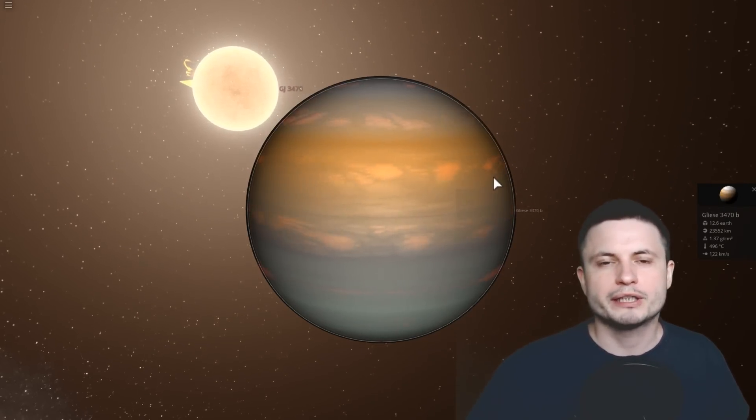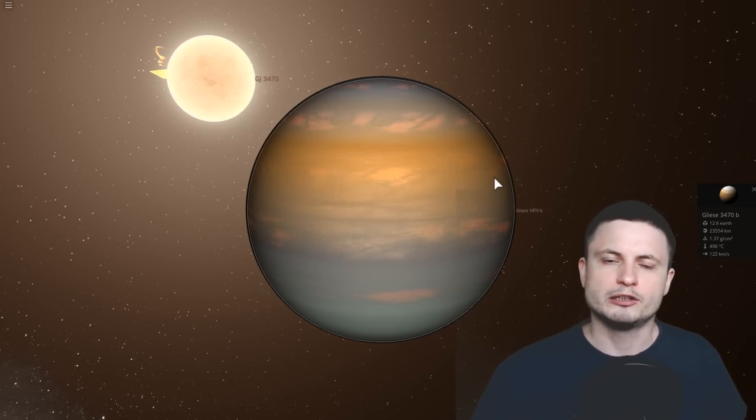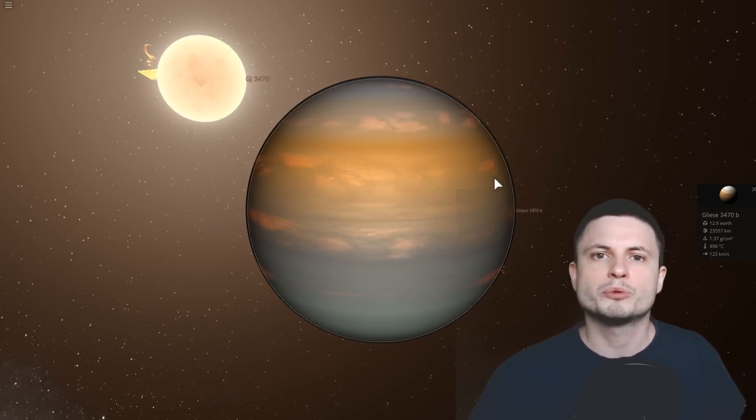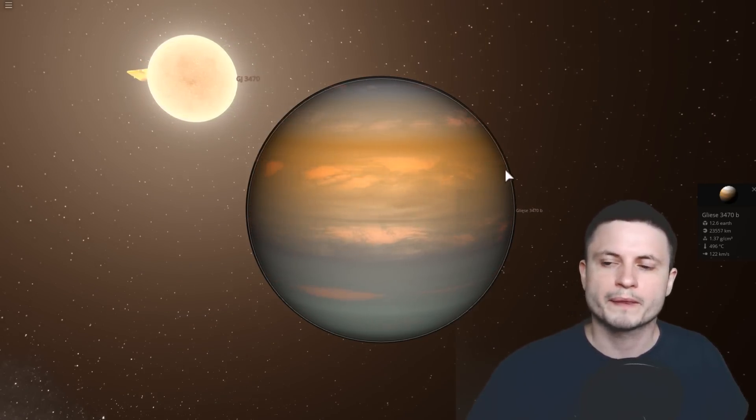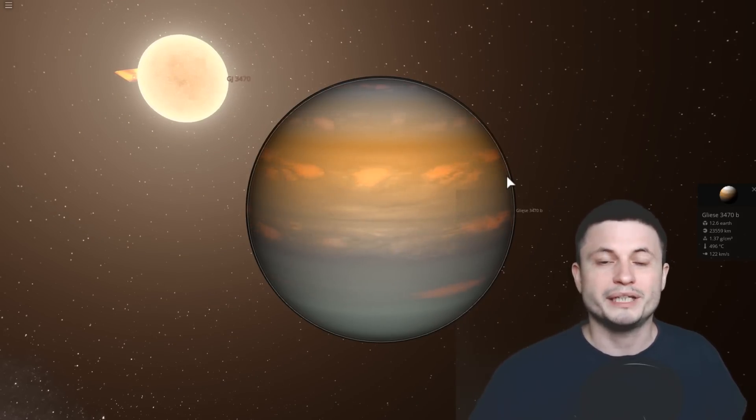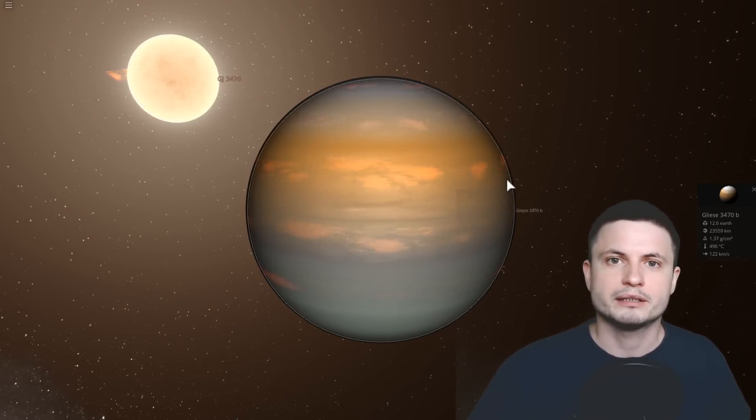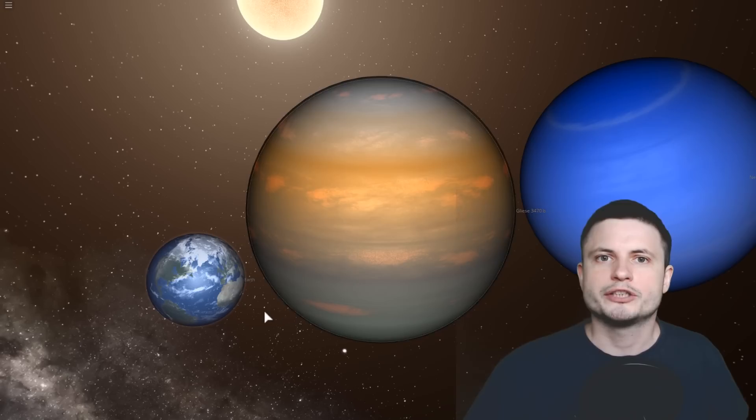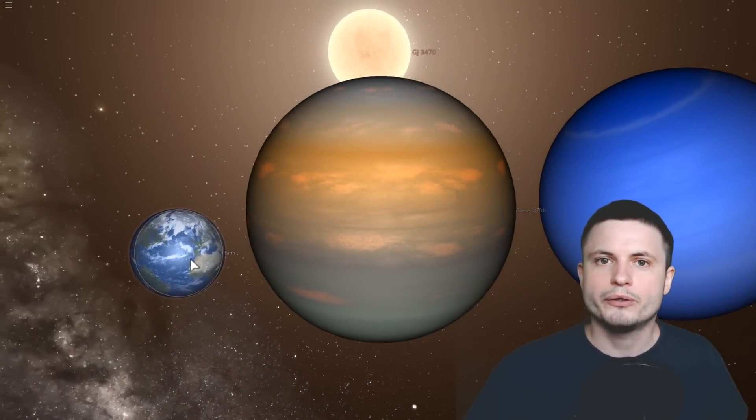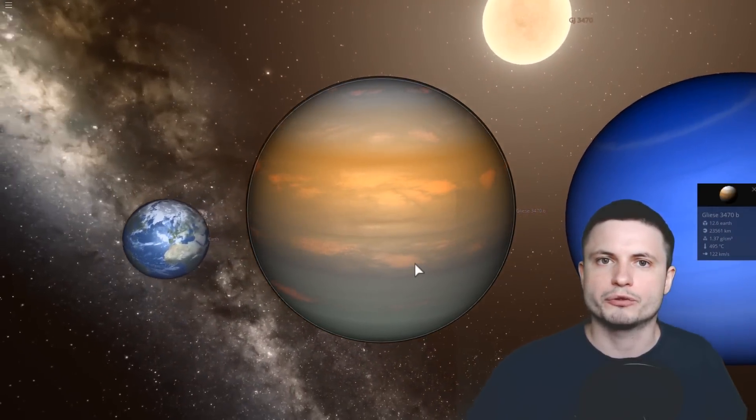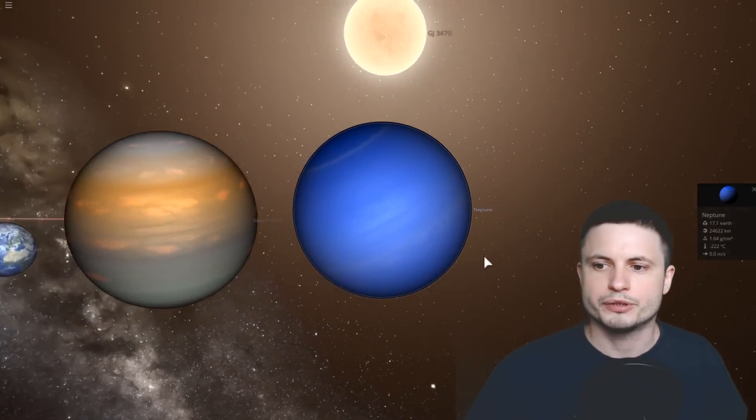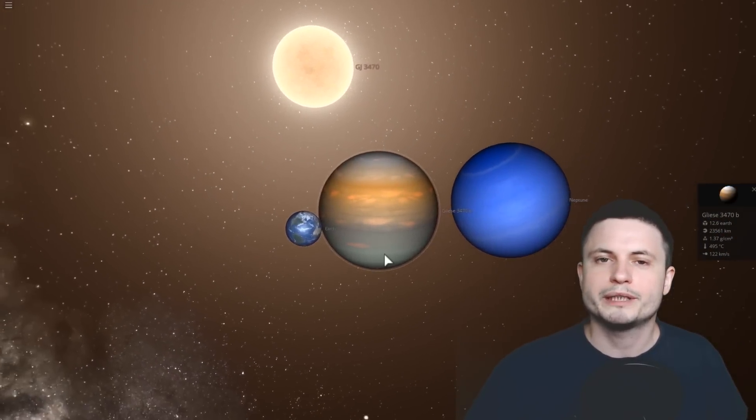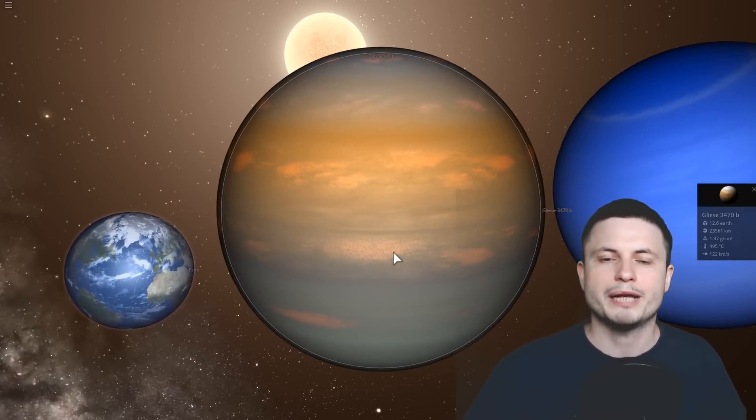We also discovered that it's a very unusual planet. In terms of the mass, it's roughly around 12.6 masses of Earth. So it's somewhere between being an Earth and being an object like Neptune. Just to give a comparison, there is Earth next to GG 3470 B, and there is Neptune. So in terms of size, it's somewhere in between them, more closer to Neptune.